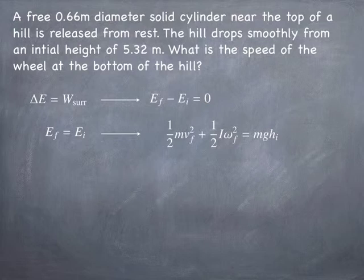And at the bottom of the hill, there's no potential energy because that's where I set the zero of potential energy. But there must be kinetic energy in order for the total energy to be conserved. So I can write down the total energy, rotational plus translational at the bottom, is equal to the potential energy at the top.